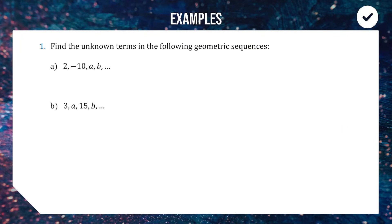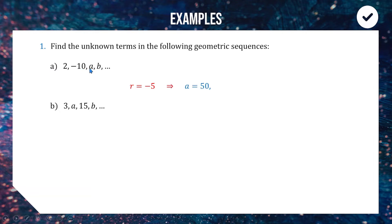Let's dive into some examples finding unknown terms in geometric sequences. In this first one, whatever is multiplying from 2 to get to negative 10 will be the same thing that gets us to a and then b. To get from 2 to 10 we're multiplying by 5, and because our sign is changing we must be multiplying by negative 5 — that's our common multiplier r. To get to a, we take negative 10 and multiply by negative 5, so a is positive 50.